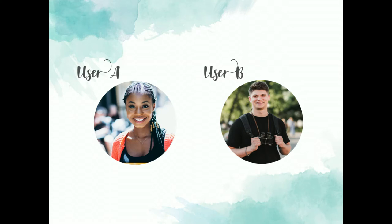Some simple examples that a lot of us have probably come across before: User A comes to a college website and wants to know more about the course offerings, tuition costs, and campus life. User B goes to a local news website and wants to know more about what events are happening around them that weekend.